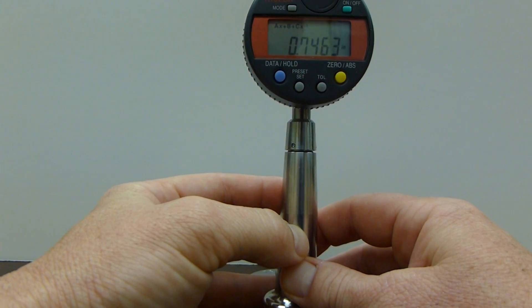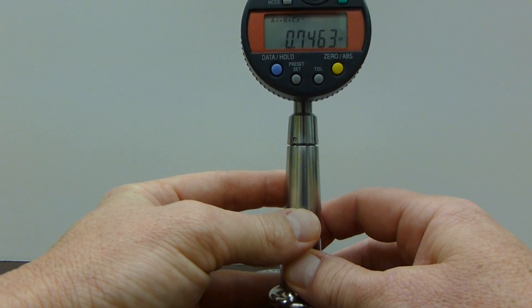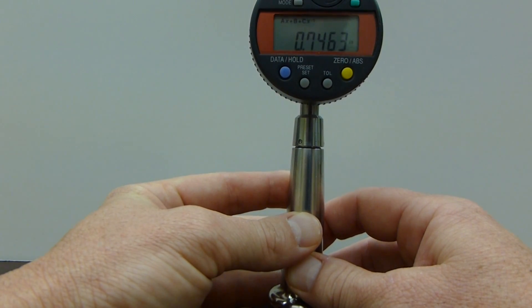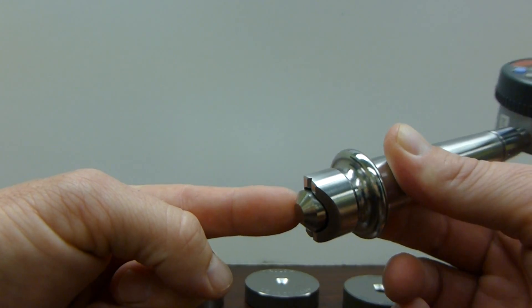This is a short video of the function of our SR900-100-2B gauge. This gauge measures 100 degree countersinks and contacts the major of the countersink diameter using a conical style plunger.